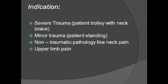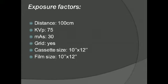For exposure factors: the focus-to-film distance (FFD) is 100 cm, kVp is 75, mAs is 30, and a grid will be used for AP views and for views done on the X-ray table. For erect views, there will be no grid.